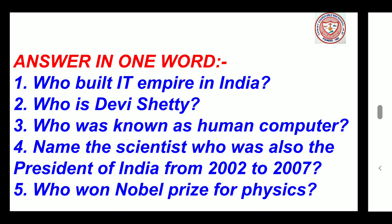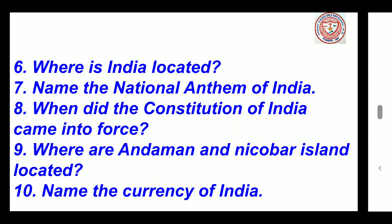Number 5: Who won the Nobel Prize for Physics? Sir C.V. Raman. Number 6: Where is India located? Asia. Number 7: Name the national anthem of India. Jana Gana Mana. Number 8: When did the constitution of India come into force? 26th January 1950. Number 9: Where are Andaman and Nicobar Islands located? Bay of Bengal. Number 10: Name the currency of India. Rupee.